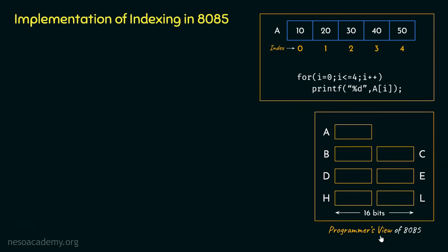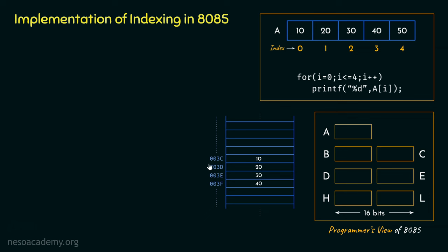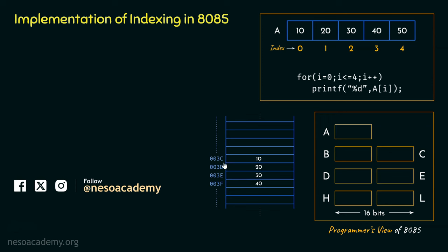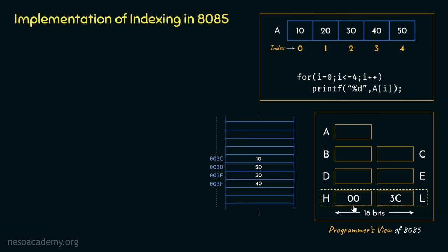For this, we will need the programmer's view of 8085, that is, all its registers. Let's assume that within the memory, from location 003C onwards, we have the data 10, 20, 30, and 40. Our intention is to bring all this data, one by one, into registers A, B, C, and D. The address of the initial element 10 in memory is 003C. Therefore, within the register pair HL, we are going to store this address — H will have 00 and L will have 3C, the higher-order and lower-order bytes. With this content in the HL pair, the microprocessor will be pointing to that particular address in memory.